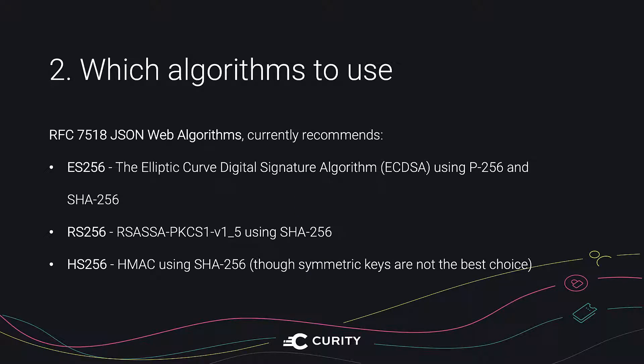There's an RFC titled JSON Web Algorithms, which lists all the different cryptographic algorithms that can be used to sign or encrypt the token, and gives recommendations based on the current state of knowledge in cryptography. When it comes to signing, three algorithms are recommended. For asymmetric signing, it's ES256 — the Elliptic Curve Digital Signature Algorithm using P-256 and SHA-256 — and RS256, which is the RSA signature algorithm defined in PKCS#1 version 1.5 using SHA-256. The latter is much more popular but much slower, so if you have a choice, go for ES256. If you're stuck with symmetric signing, you should use HS256, which is HMAC using SHA-256.